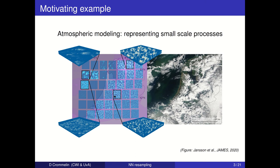The motivating example I have in mind is how to represent or parameterize small-scale processes in atmosphere-ocean modeling. On the right is a satellite picture and on the left a modeling snapshot from a large-scale model, within which small-scale models are nested that can resolve atmospheric cloud and convection processes. How to represent these small-scale processes is a very important and open problem in atmospheric modeling.